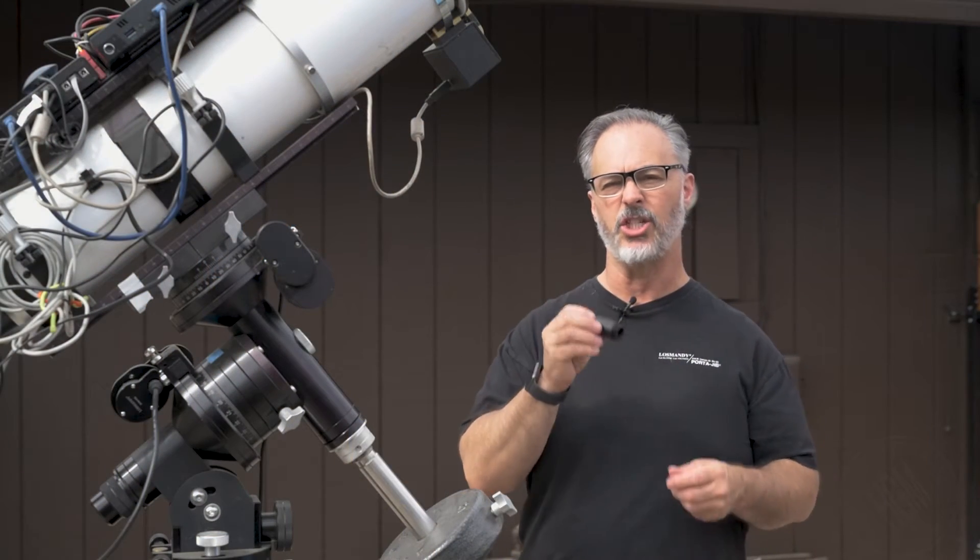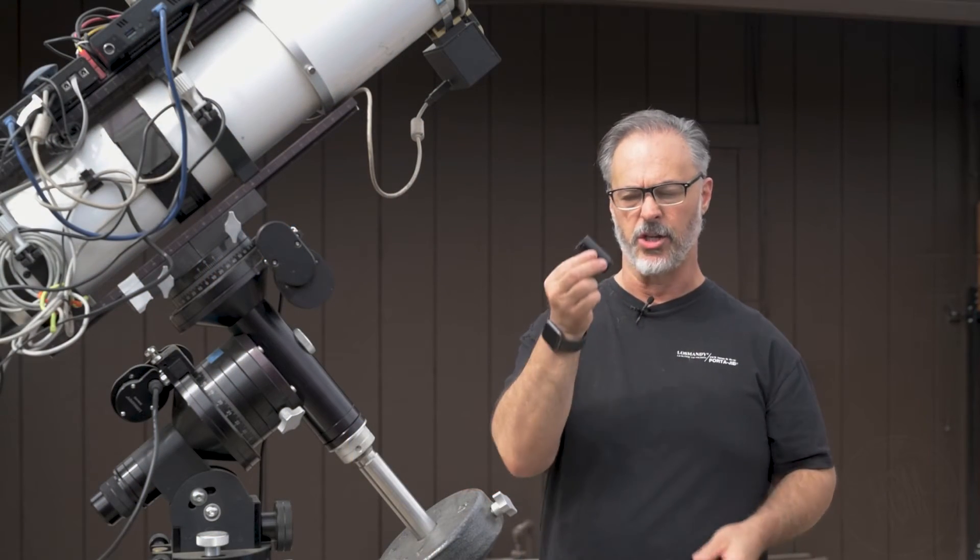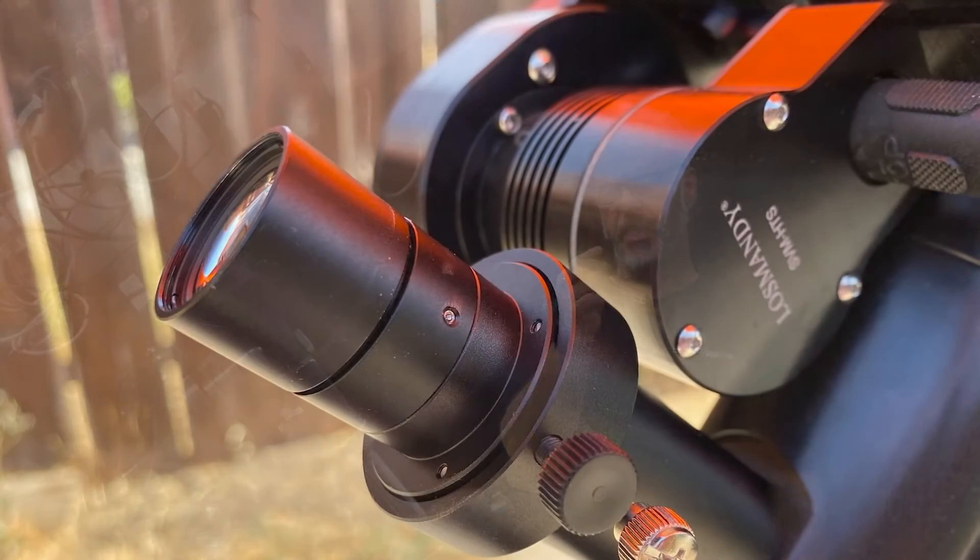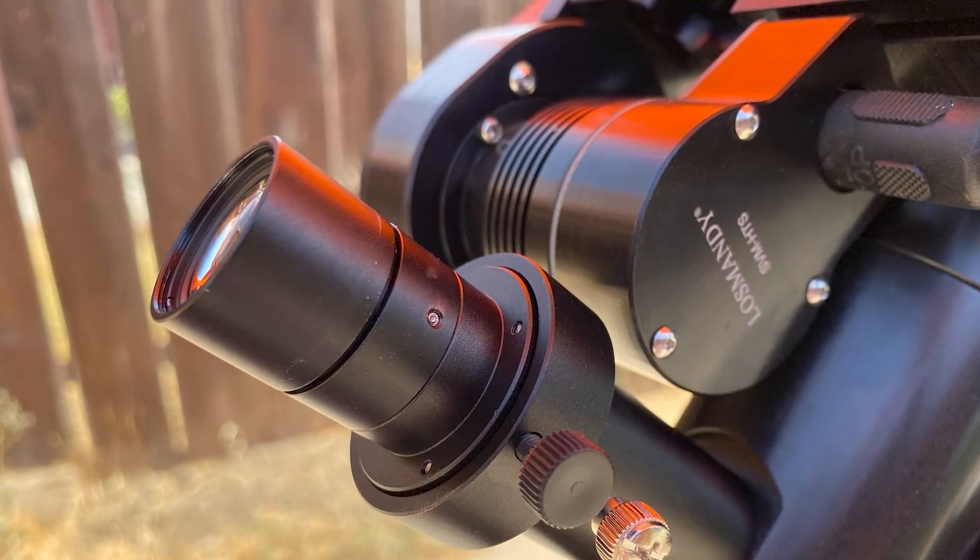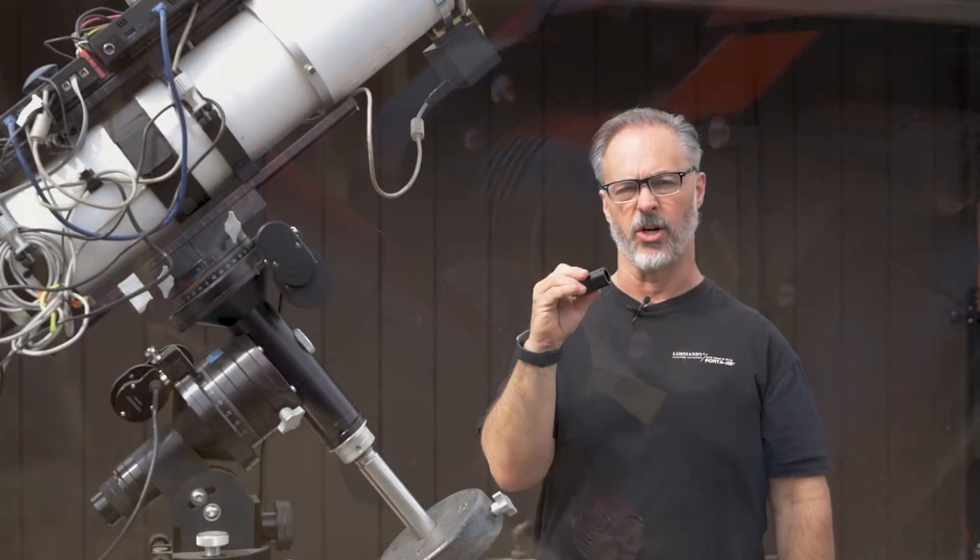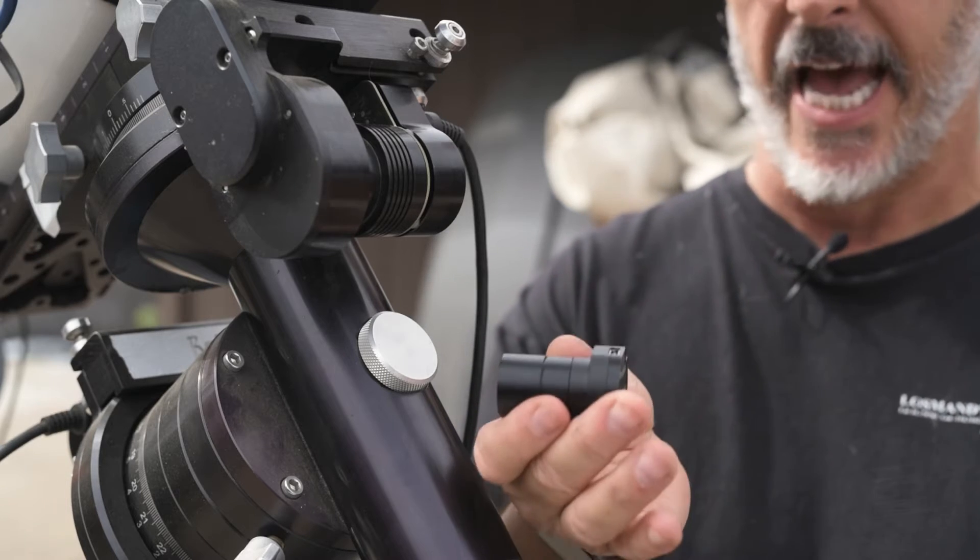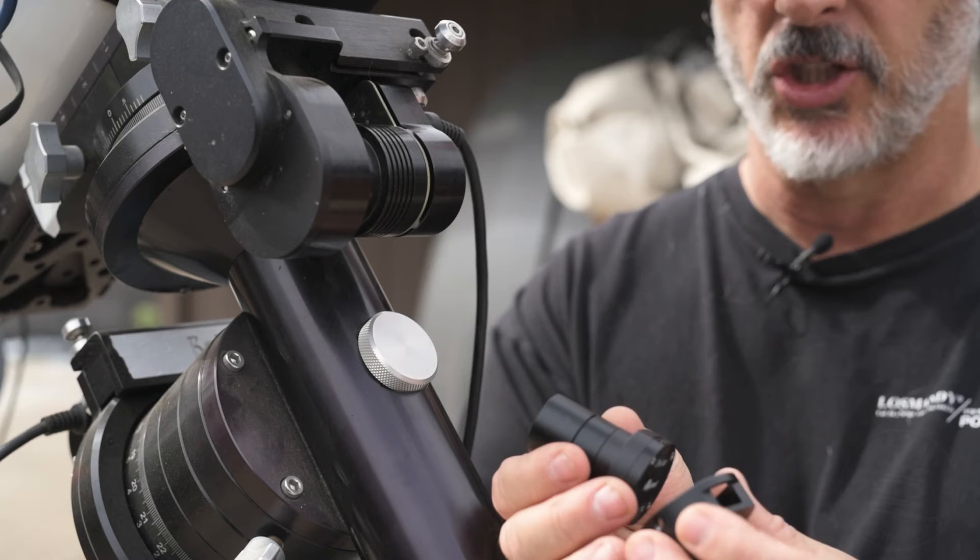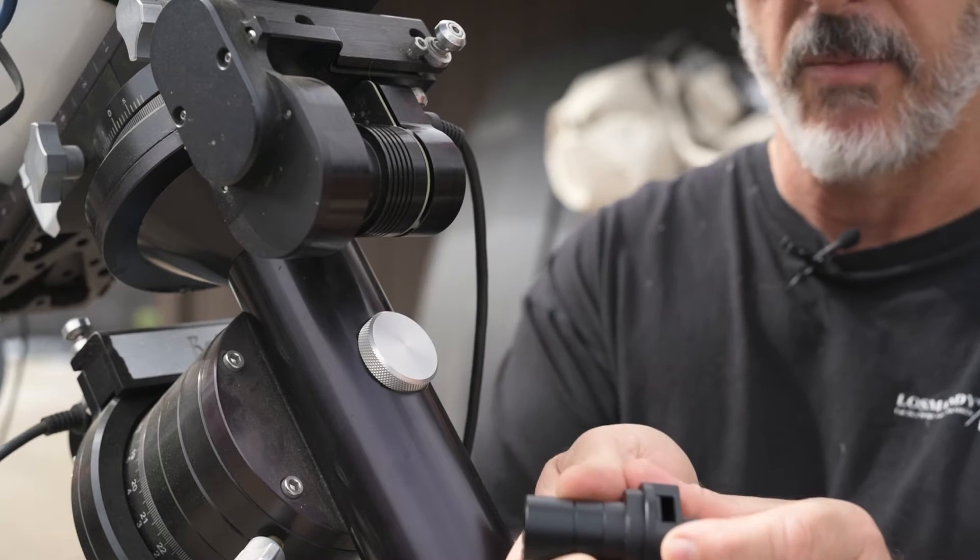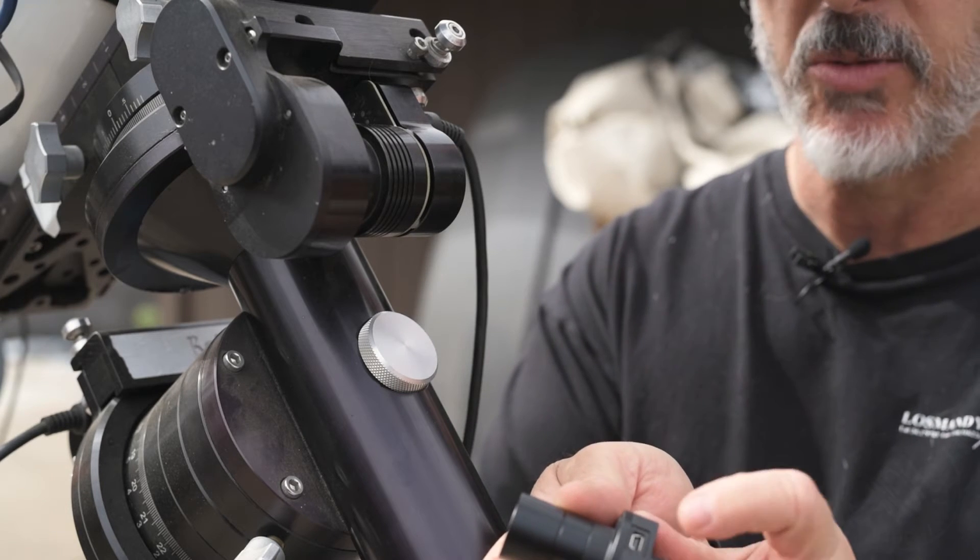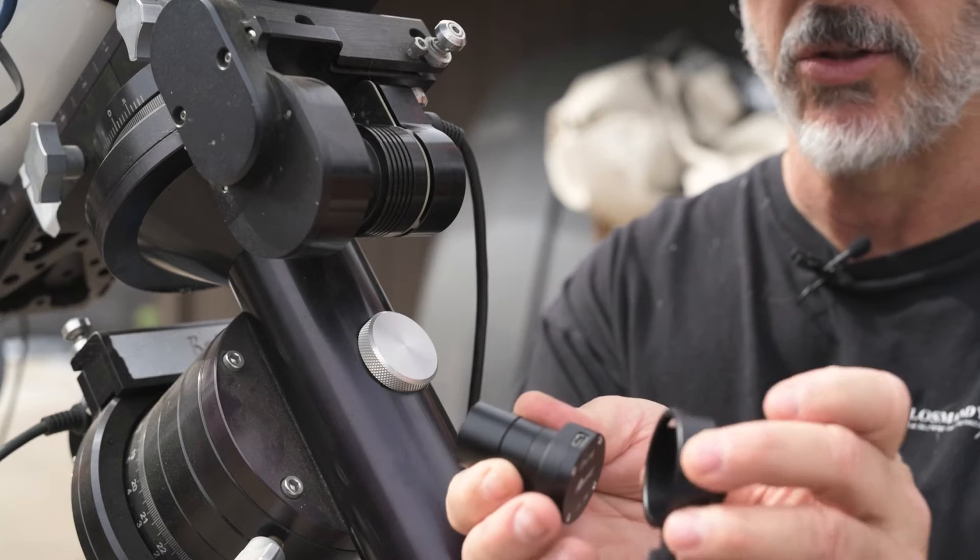Or if you're using a GM8 or GM811 you're going to use a longer version and this allows the camera to extend past the motor so that it doesn't interfere with the iPolar operation. So the first thing we're going to do is take the iPolar camera and attach this generic adapter. You want to make sure that you're aligning the USB port in with this hole here.